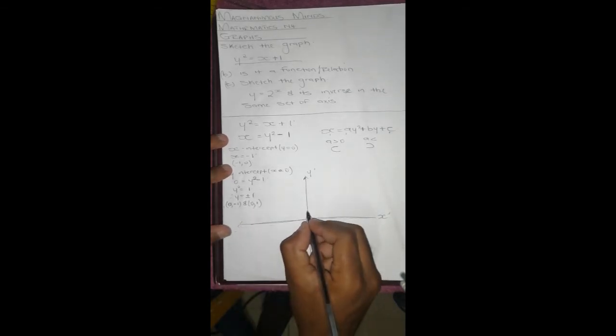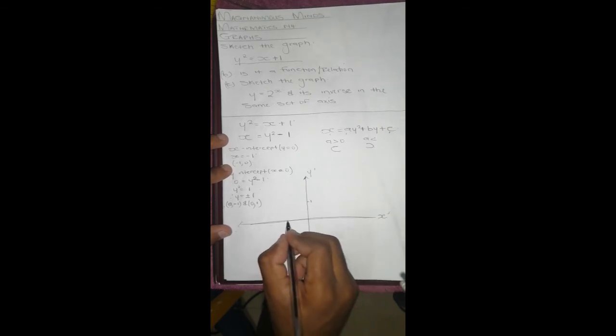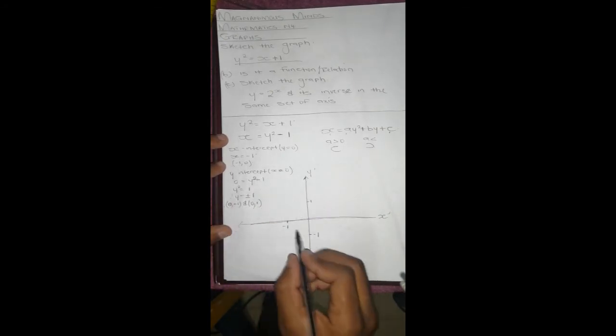We'll mark that. Let's say our 1 is right here and our negative 1 is right here, and our negative 1 on the x-axis right here.